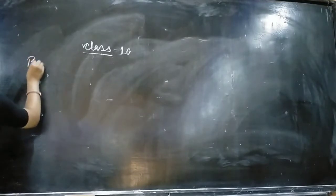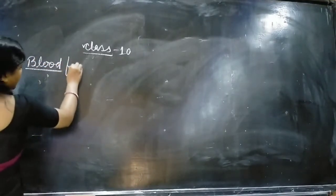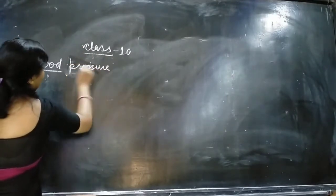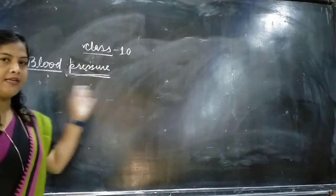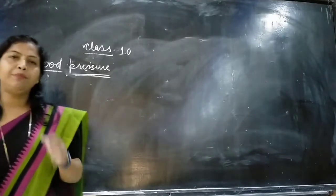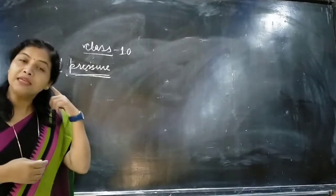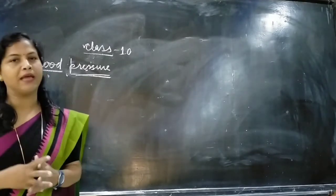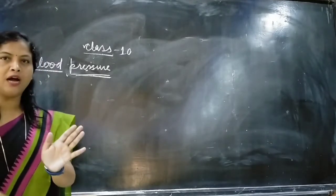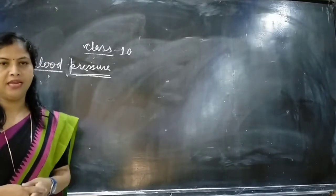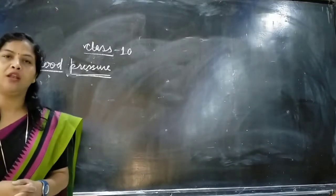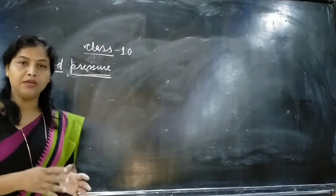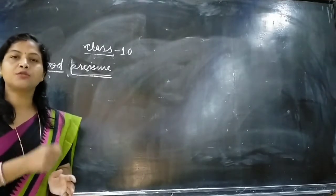Before I start explaining what blood pressure is, let me make you understand what we mean by the pressure exerted by the blood. Blood flows in the arteries, which are sent by the heart. When the blood flows through the artery, it exerts pressure to the artery wall. And this is what is known as blood pressure — the pressure exerted by the blood on the artery walls is called blood pressure.